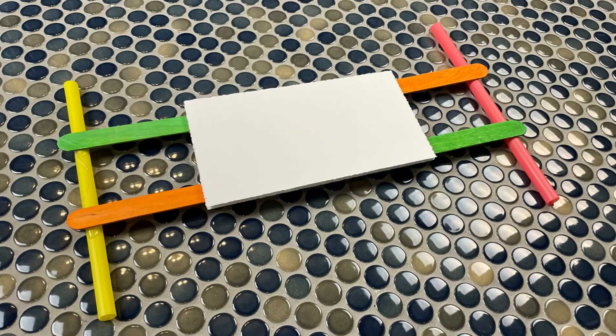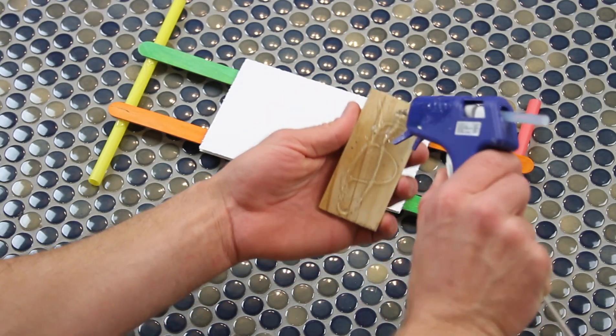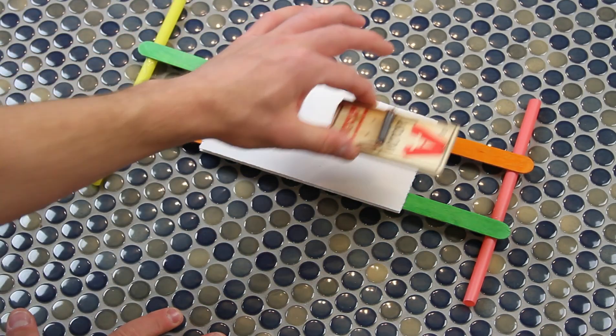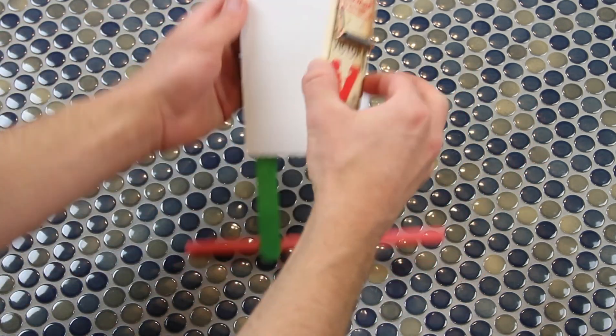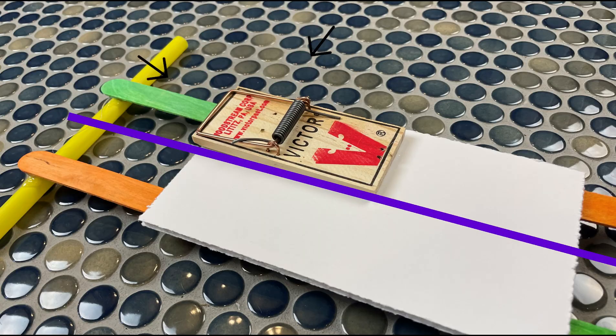Flip it back over and this is what we should have so far. Next up is the mousetrap, and what's important here is the placement of it. What we want to do is line up the side of the mousetrap with the middle of the foam board, and the metal part that gets lifted up goes along the top edge of it.